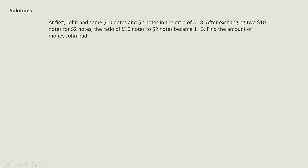So let's read the question first. At first John has some $10 notes and $2 notes in a ratio of 3 to 8, so this is a starting ratio. After exchanging two $10 notes for $2 notes, the ratio of $10 notes to $2 notes became 1 to 3, and this is the final ratio.